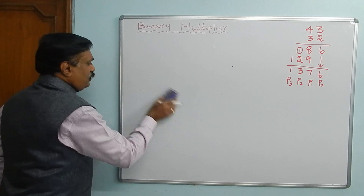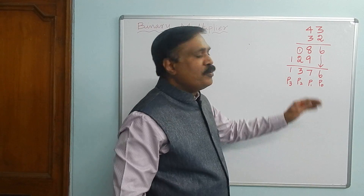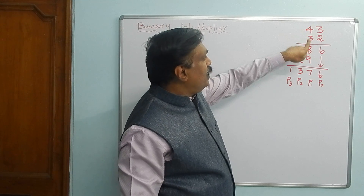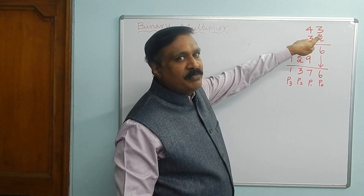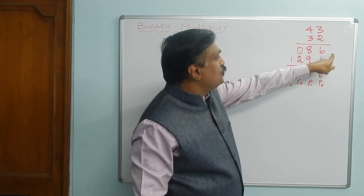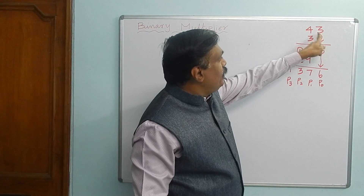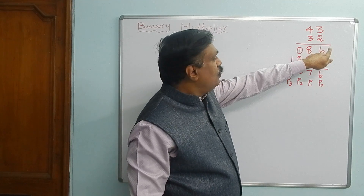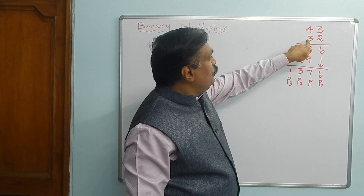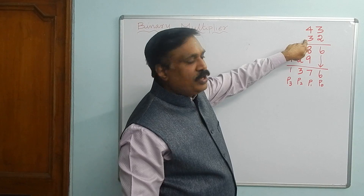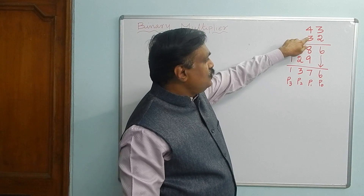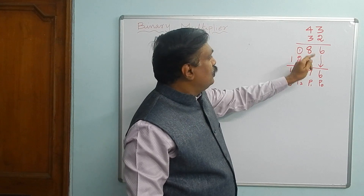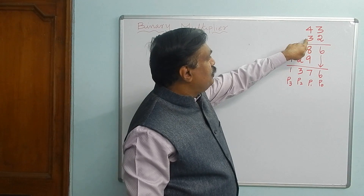In school classes, we will study normal decimal multiplication. I have taken two numbers, 43 and 32 — both are decimal numbers. If you multiply 3 by 2, you get 6, and 2 by 4 gives 8. So 43 multiplied by the first digit 2 gives 86. And you have to multiply by the second digit 3, and for this you have to shift one digit left.